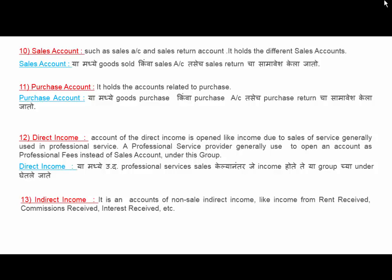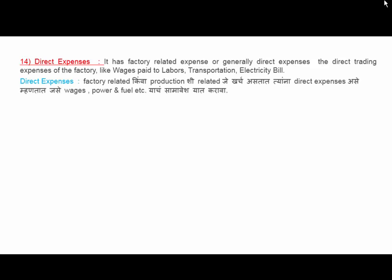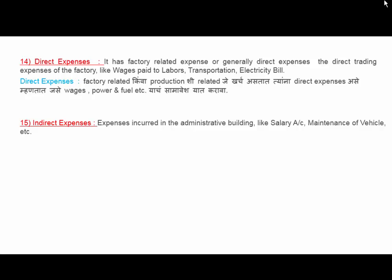Indirect Income holds accounts of non-sales indirect income like rent received, commission received, and interest received. Direct Expenses includes factory-related expenses such as wages paid to laborers, transportation, and electricity bills. Indirect Expenses are expenses incurred in the administrative building, like salary, maintenance of vehicle, and all expenses not related to factory or production — such as commission allowed and discount allowed.